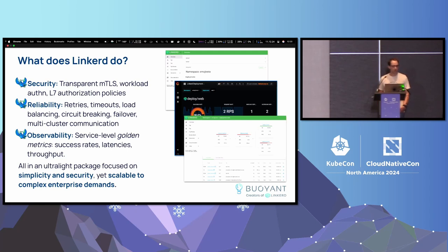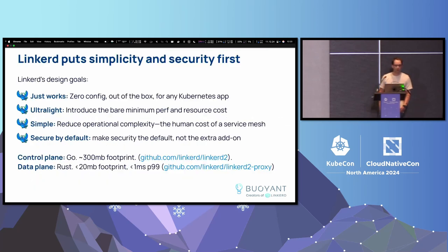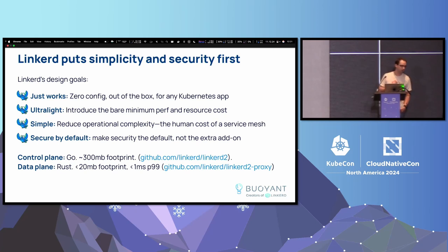It's an ultralight, simple, secure, purpose-built proxy, which is different than other ones. Linkerd puts simplicity and security first — it just works. There are zero changes you need to make on your applications. It's simple and ultralight, which is very important especially at this KubeCon where AI and ML is a big topic.